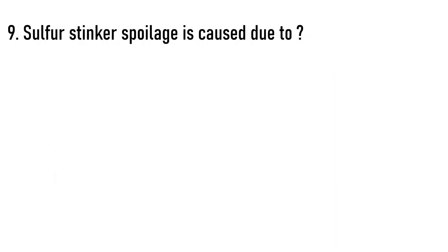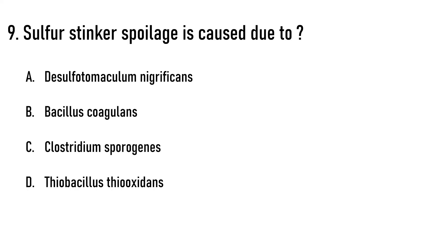Next question: Sulfur stinker spoilage is caused due to which organism? Options are: A) Desulfatomaculum nigrificans, B) Bacillus coagulans, C) Clostridium sporogenes, D) Thiobacillus thiooxidans. The correct answer is option A, Desulfatomaculum nigrificans. This is the bacteria that produces sulfur gas, hence it is called sulfur stinker spoilage.